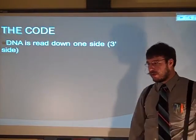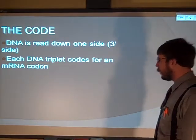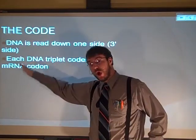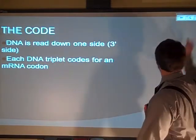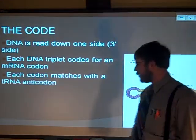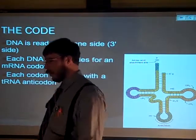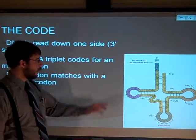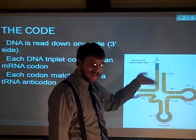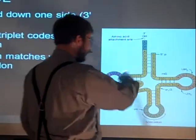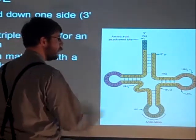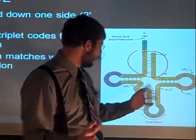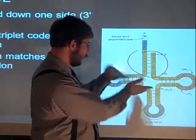Remember, the coding side of your DNA gets read down, that one side, that three prime side. Each DNA triplet codes for an mRNA codon. Just getting some terminology out here. Each codon on the mRNA matches with an anticodon on the tRNA, which looks like this. Remember, RNA is single-stranded, so it has this ability to form some of those hydrogen bonds and actually do a little bit of base pairing and matches up sort of like a delicious enzyme.